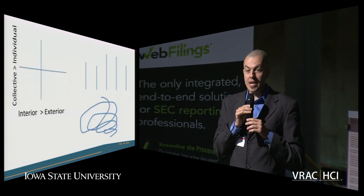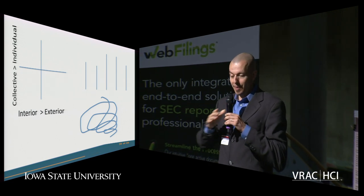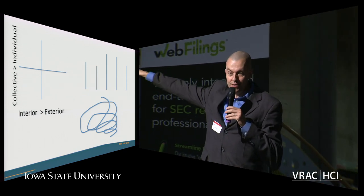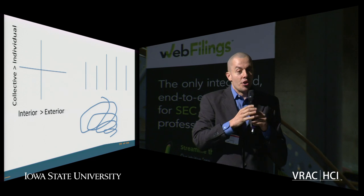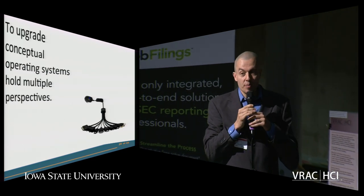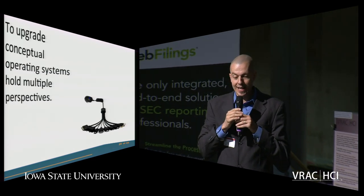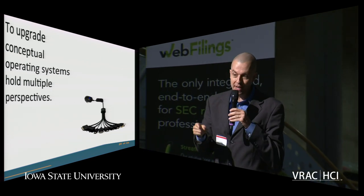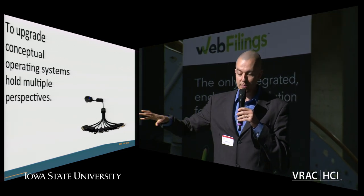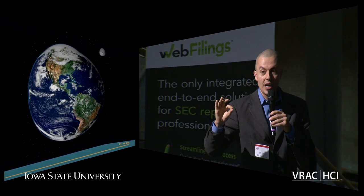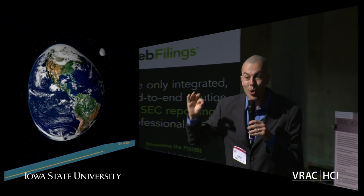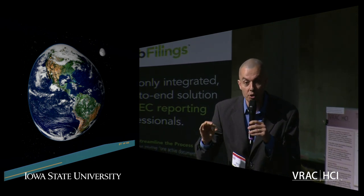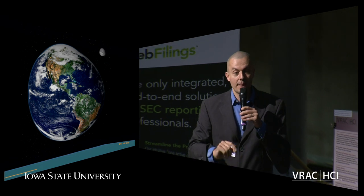So there you go — three of the maps: Spiral Dynamics, Four Quadrants, and Lines and Levels. Your ability to hold multiple perspectives is going to upgrade your conceptual understanding, which allows you to be an adapter and plug in to more people and do more good. Because the world is getting more complex and you need tools to handle it. But the world is also getting smaller, and the ability to hold multiple perspectives helps you to touch more people. Thank you.